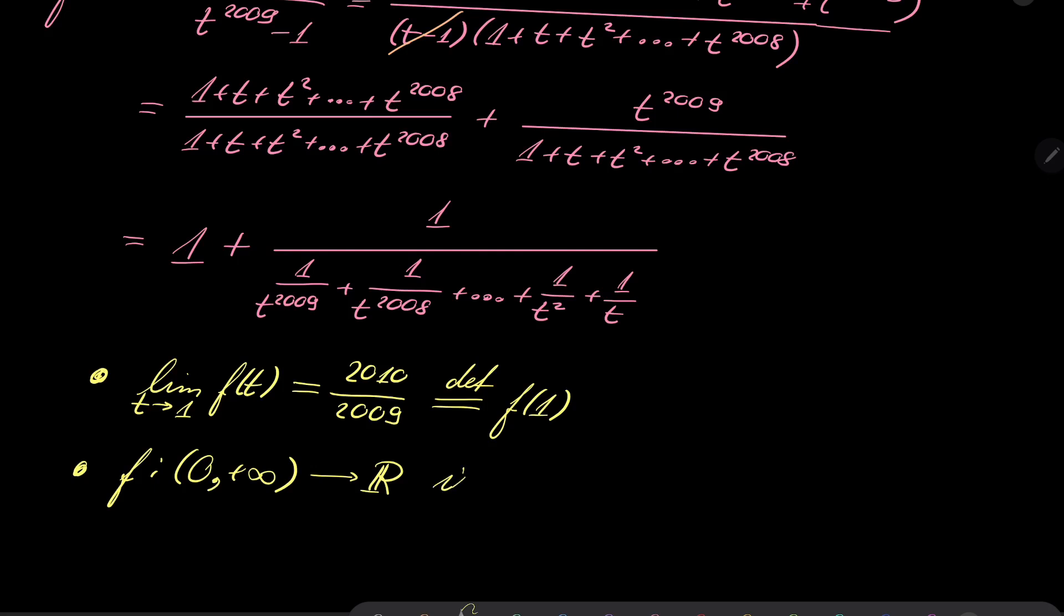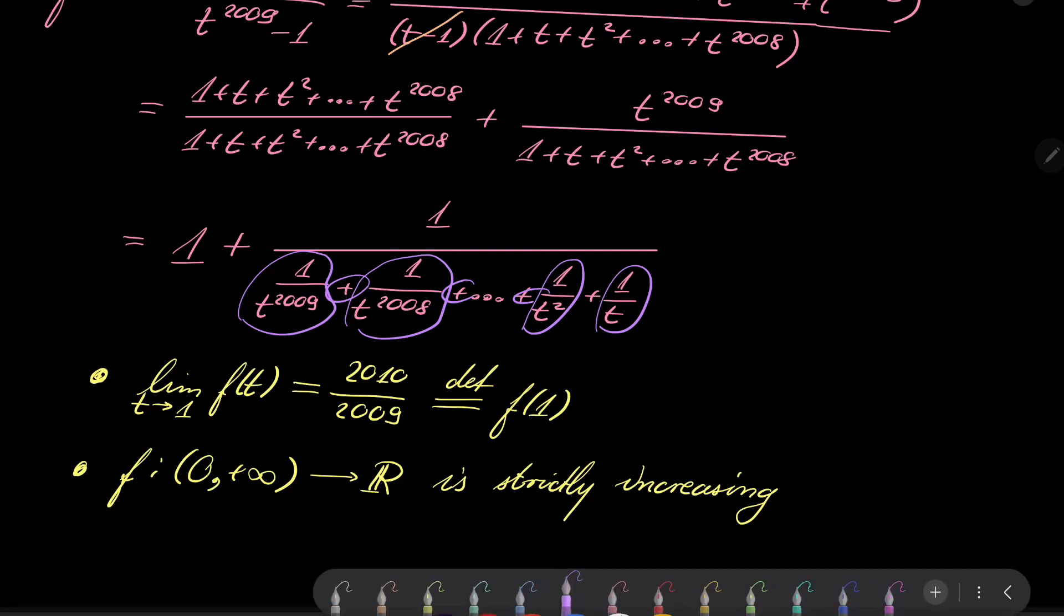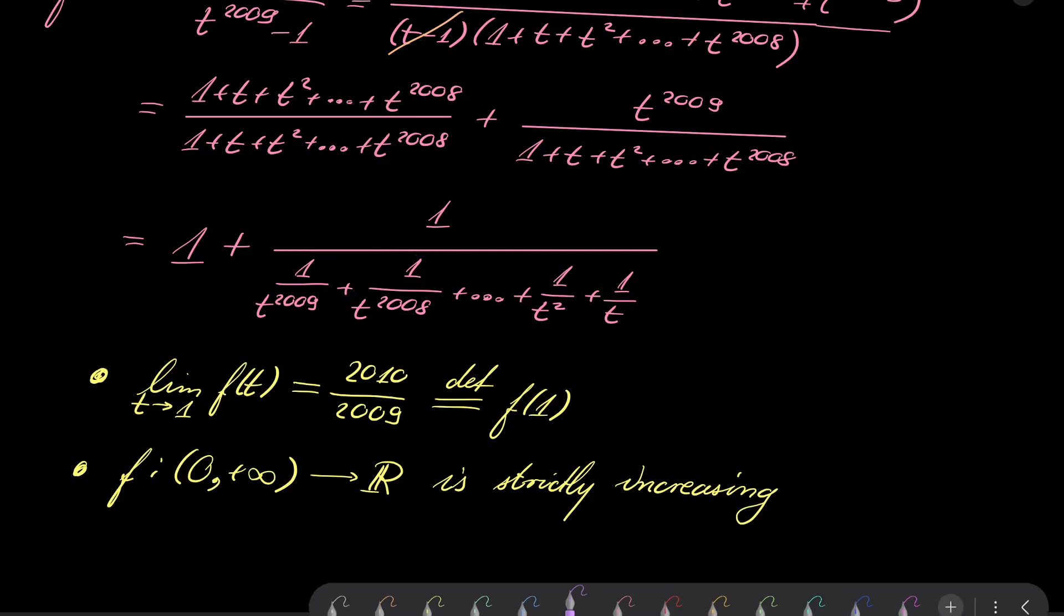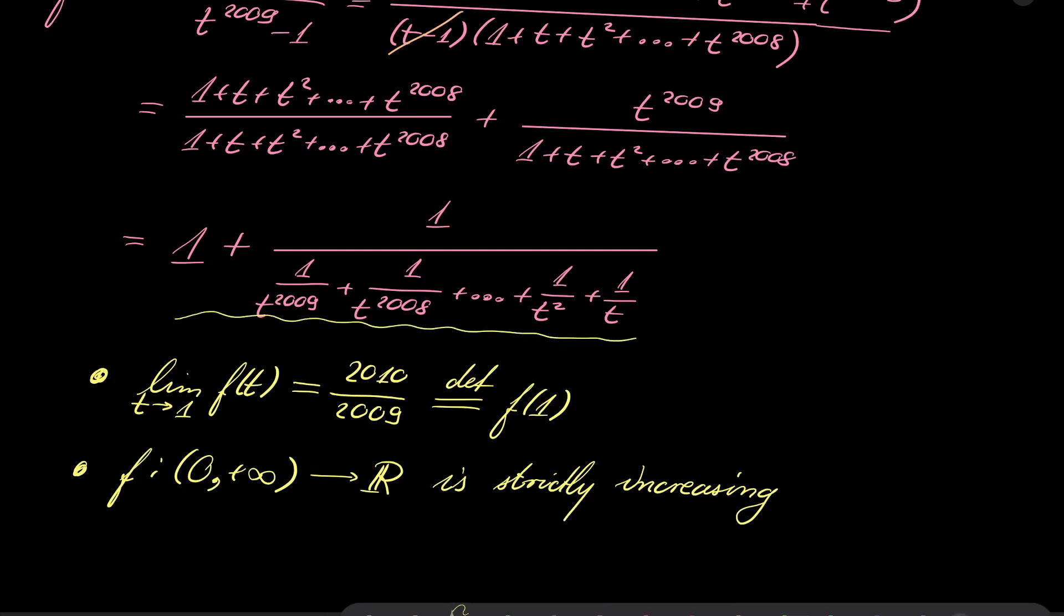Notice that this function is strictly increasing. How do I know it? Let's take a look at this expression. Notice that all of these functions, 1/t^2009, 1/t^2008, etc., they are decreasing. Sum of decreasing functions is again decreasing, but this function is obviously positive. So we have 1 over decreasing function, which is increasing function. And something increasing plus 1 is also strictly increasing.